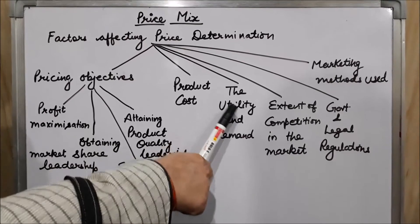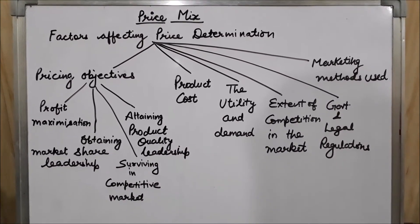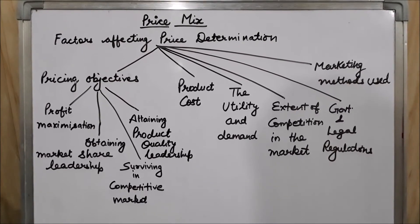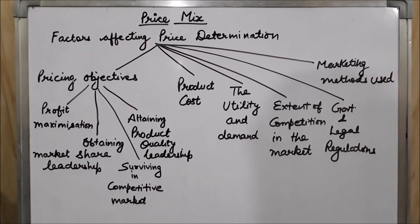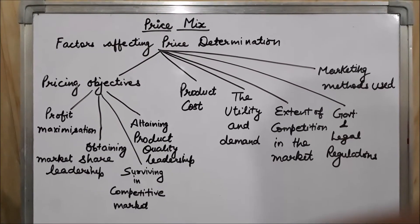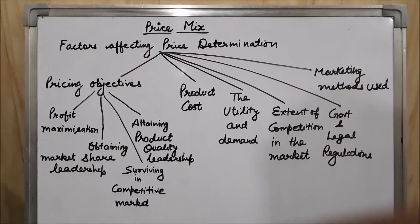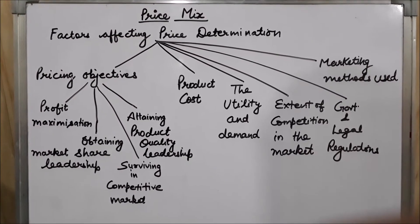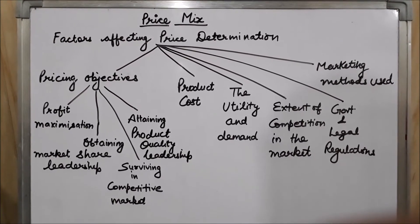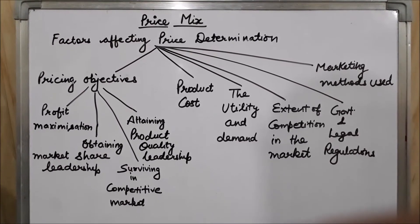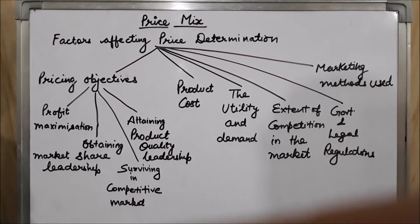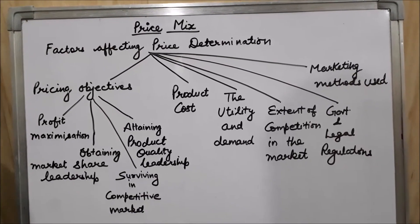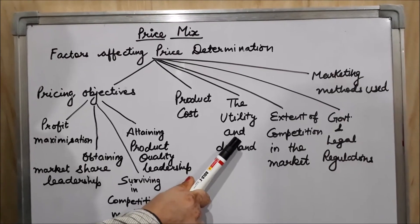The next factor is utility and demand, which must be considered while fixing the price. If a product has inelastic demand — meaning it has very few or no substitute products — the demand is not affected by increases or decreases in price. Revenues are also unaffected. So in that case, the price of goods and services can be fixed high, because price cannot affect demand for inelastic goods.